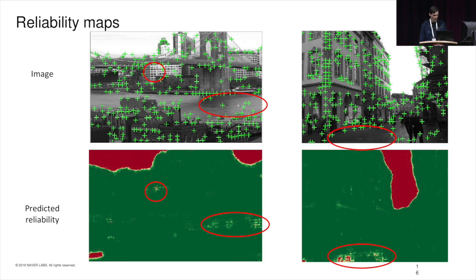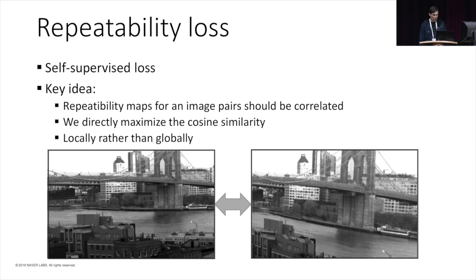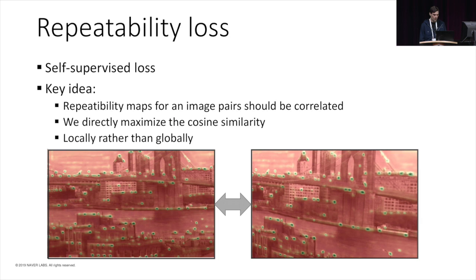This was for the reliability loss. Now, to learn the repeatability, we rely on a simple self-supervised idea. Repeatability essentially means that the two maps obtained for a training pair are correlated, so we directly maximize this correlation. Rather than doing it globally, we compute the correlation at a patch level so that it is robust to occlusions, border effects, and so on. Here are the repeatability maps computed for these two images by our network, and you can see that local maxima well correspond despite the homography.